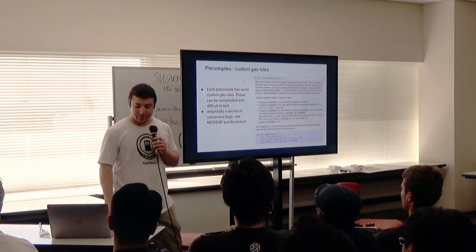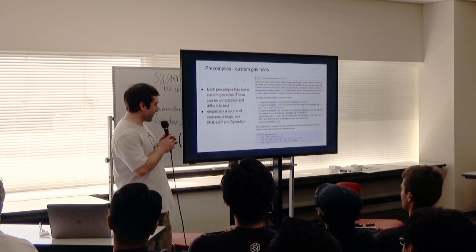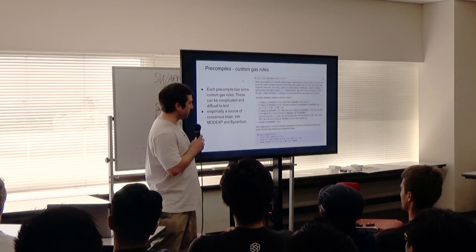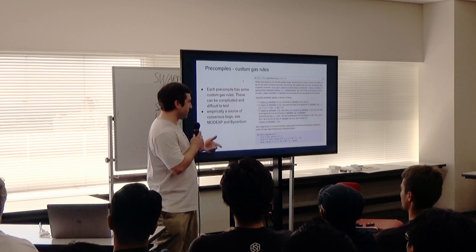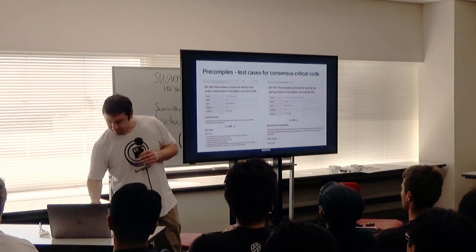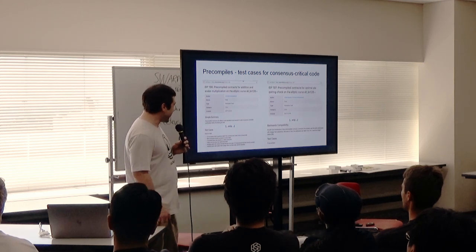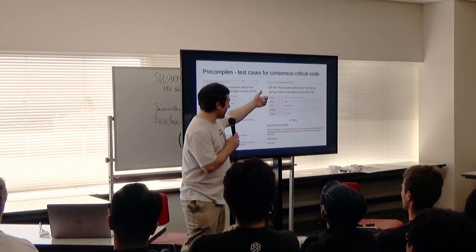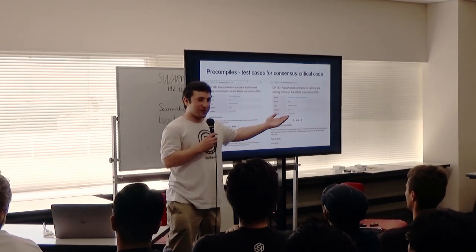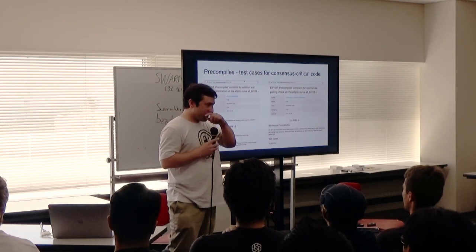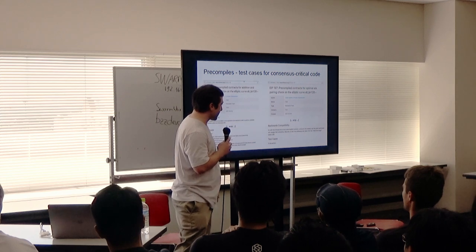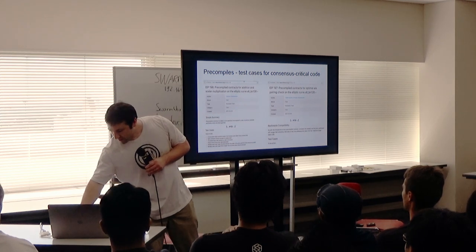With pre-compiles come custom gas rules that are very complicated. There was a consensus bug found after the testnet rollout for mod_exp — found before mainnet activation but still on testnet. There was also a consensus bug found in the pairing check. That EIP still said 'test cases to be written' because everybody wants to propose new pre-compiles but nobody wants to write test cases. I actually found that consensus bug after it was activated on mainnet.